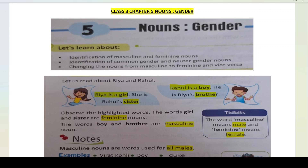In this chapter, we will study what gender is and how we identify genders, how do we identify them, how do we study them. We will learn how to change the nouns from one gender to the other, the identification of masculine and feminine nouns, identification of common gender and neutral gender nouns, and changing the nouns from masculine to feminine and from feminine to masculine.